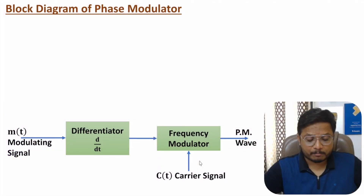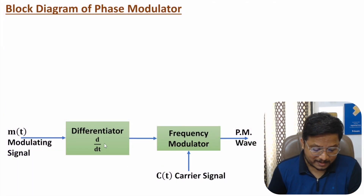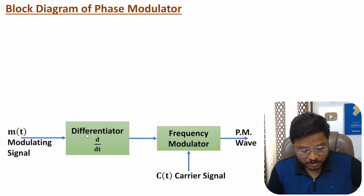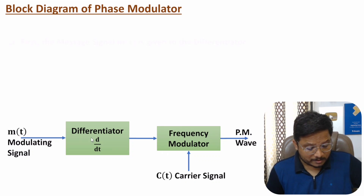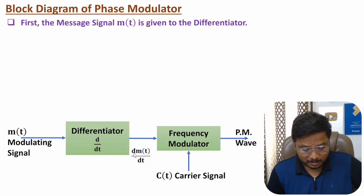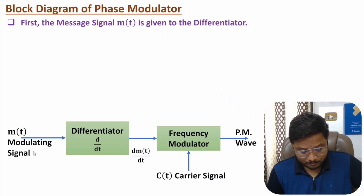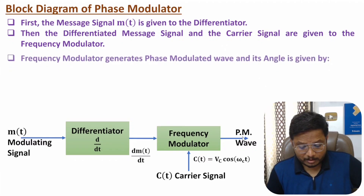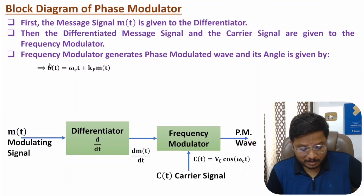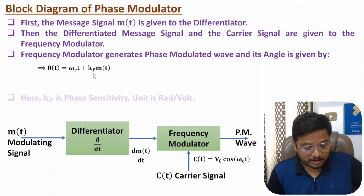Let me explain the basic block diagram of the phase modulator. There are two essential elements: the message signal is given to a differentiator, and that differentiated message signal is given to a frequency modulator. Another input to the frequency modulator is the carrier signal. The output of the frequency modulator generates the phase modulated wave. The differentiated signal is dm(t)/dt, where m(t) is the message signal.